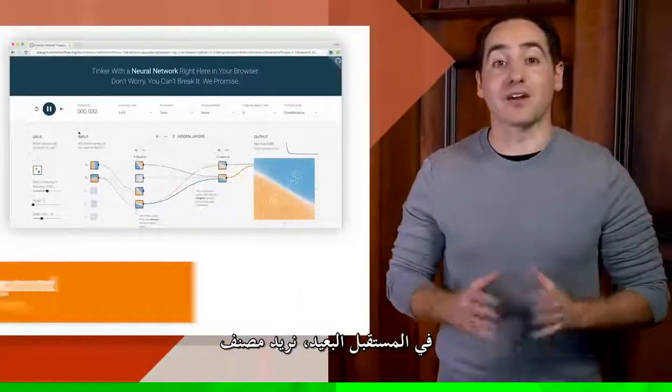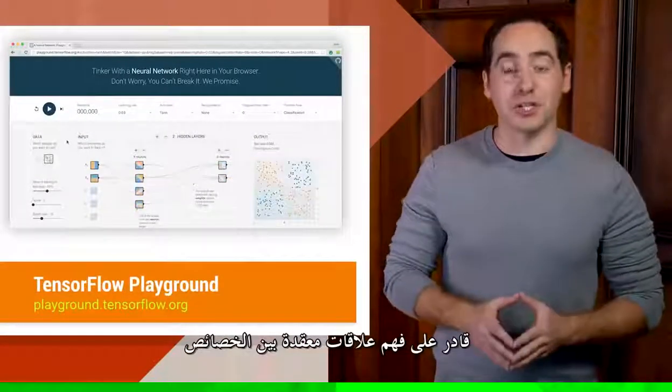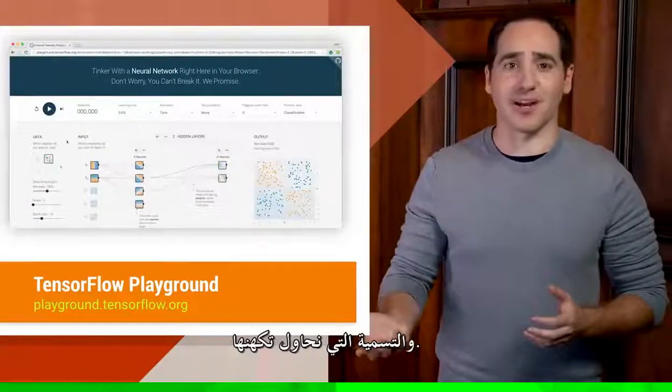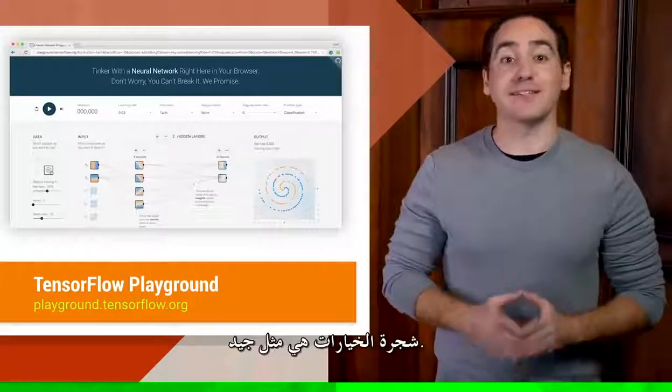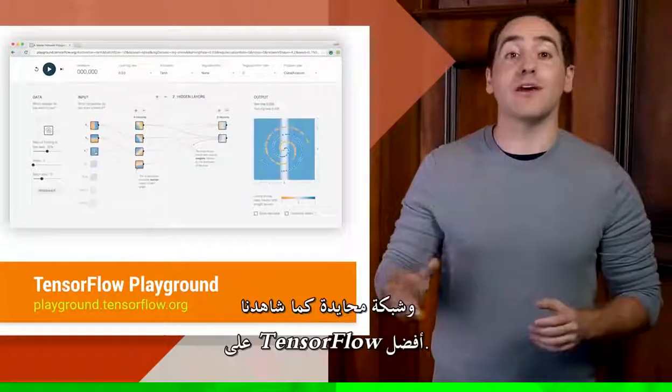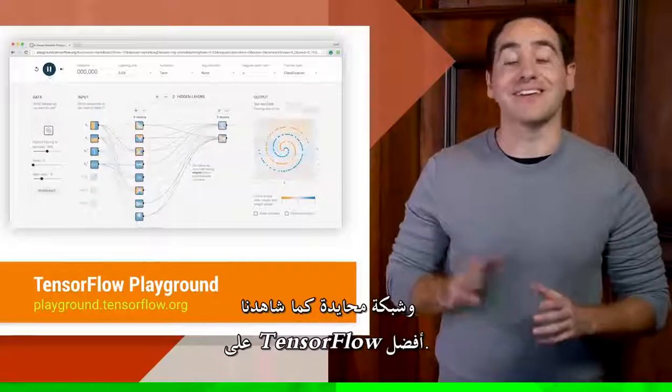In the long run, we want a classifier that learns more complex relationships between features and the label we're trying to predict. A decision tree is a good example of that, and a neural network like we saw in TensorFlow Playground is even better.